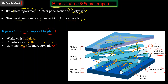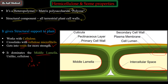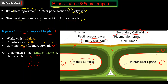Hemicellulose gives more structural support to the cell wall and resides more in the middle lamella, unlike cellulose which is more in the primary and secondary cell wall. The middle lamella is the area between two adjacent plant cells. Each cell has a plasma membrane, then a secondary cell wall, then a primary cell wall outermost. Outside the primary cell wall is the middle lamella, where hemicellulose dominates.